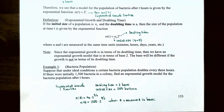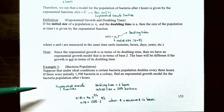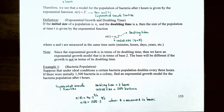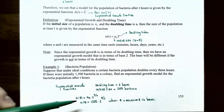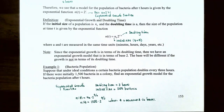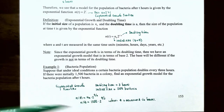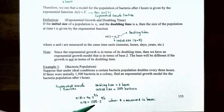Example 1 — bacteria growth. Suppose that under ideal conditions a certain bacteria population doubles every 3 hours, and there are initially 1,500 bacteria in a colony. We need the doubling time, which is 3 hours, and the initial population, which is 1,500 bacteria. The exponential growth model is n(t) = 1,500 · 2^(t/3), where t is measured in hours because the doubling time was given in hours.